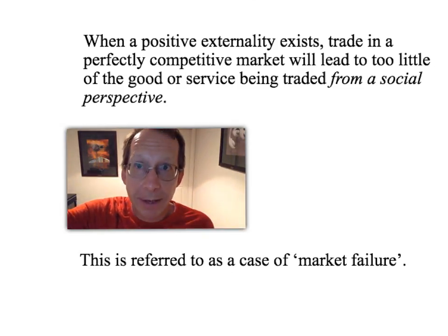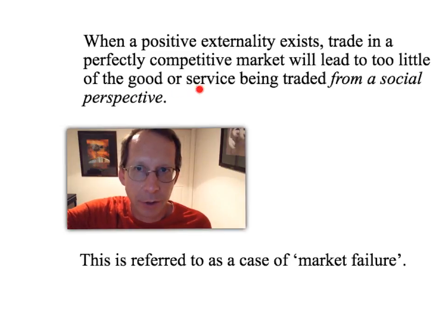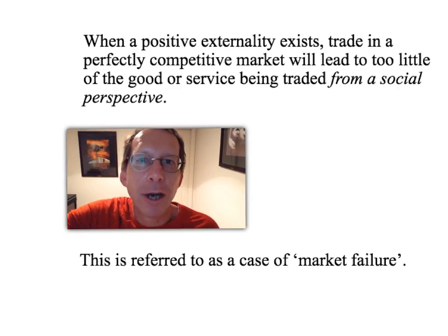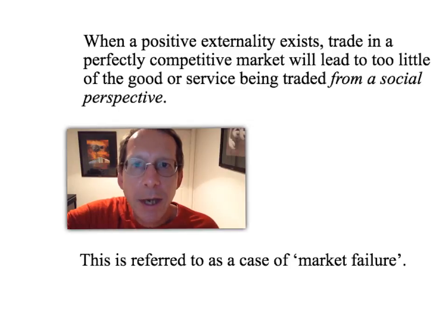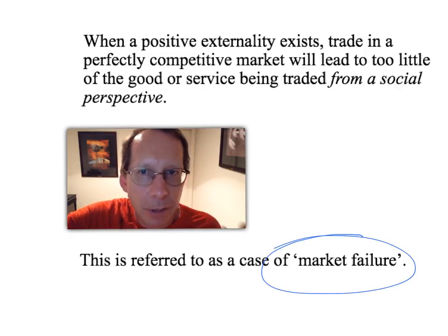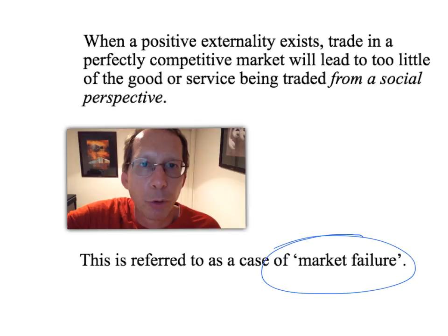When there is a positive externality, trade in perfectly competitive markets leads to too little of a good or service being traded from a social perspective. This is sort of common sense: whenever Sam squirts deodorant, he creates benefits he cannot capture. When he makes his private decision, he only considers his private benefits, so he tends to buy too little deodorant because he's not accounting for the positive benefits he creates for others. This is referred to as a case of market failure. We'll explore later in this course how that may justify government policies to improve the market outcome.